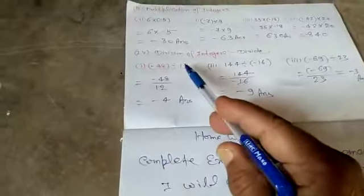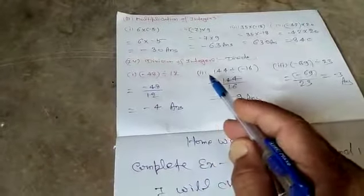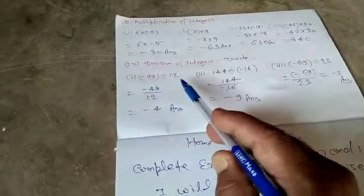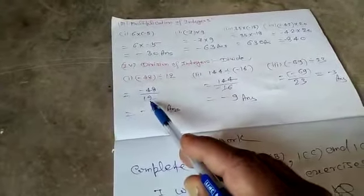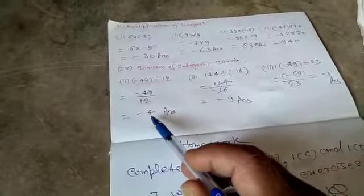Similarly. Fourth operation on integer. That is division of integers. Taking some example of it. First. Minus 48 divided by 12. That is equal to minus 48 upon 12. Simplify this. Equal to minus 4.